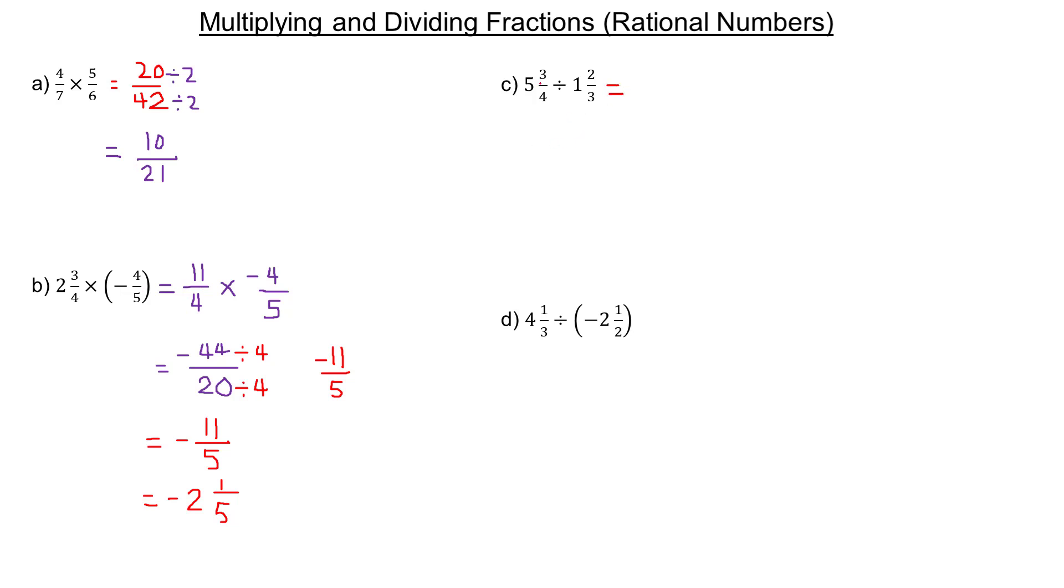First, change them to improper form. 5 times 4 is 20, plus 3 is 23, so that's 23/4. For the second fraction, 1 times 3 is 3, plus 2 is 5, so that's 5/3.